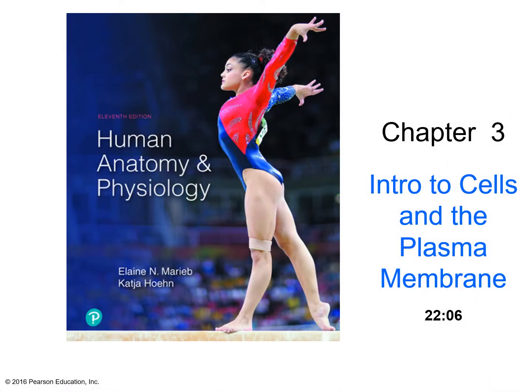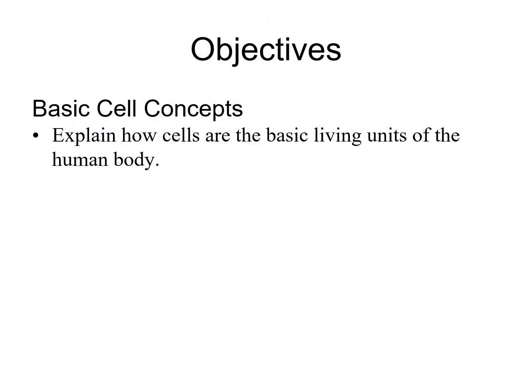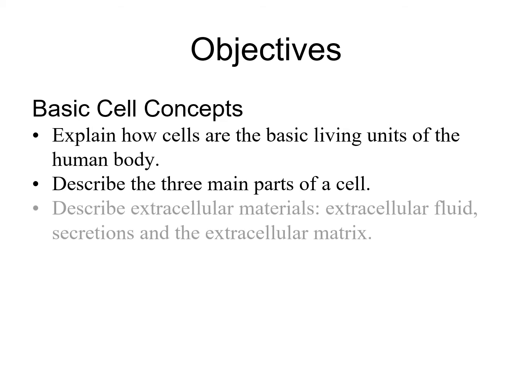This screencast covers the topics Introduction to Cells and the Plasma Membrane. You will find this topic in Chapter 3 of your textbook. We will start by covering basic cell concepts. Here are your initial learning objectives: explain how cells are the basic living units of the human body, describe the three main parts of a cell, and describe extracellular materials.